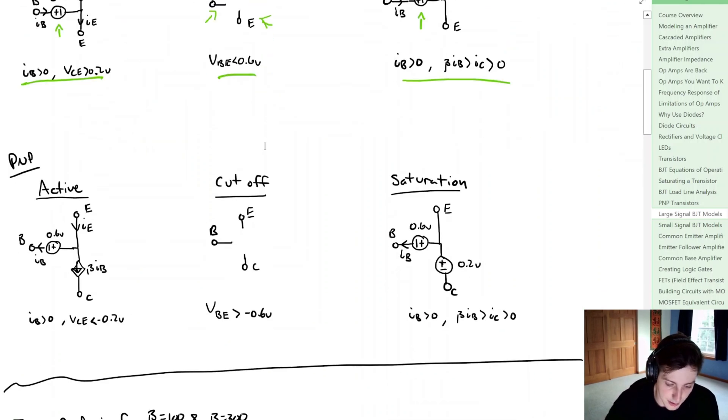For a PNP transistor it's a little bit different but fairly similar. From VE to VB we say that we have a 0.6 volt drop and we say again that the collector current is equal to beta times IB. Cutoff mode is pretty straightforward just like with the NPN. In the saturation mode again we have this 0.6 volt drop from E to B, the emitter to the base. We say that VEC is equal to 0.2 volts and again we have our appropriate conditions.